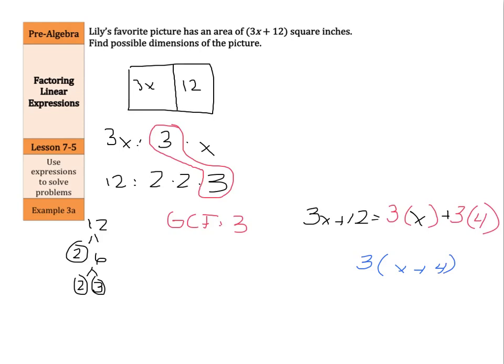So when I look at my rectangle now, my possible dimensions are 3 by (x plus 4), as when you multiply those together you would get 3x plus 12.